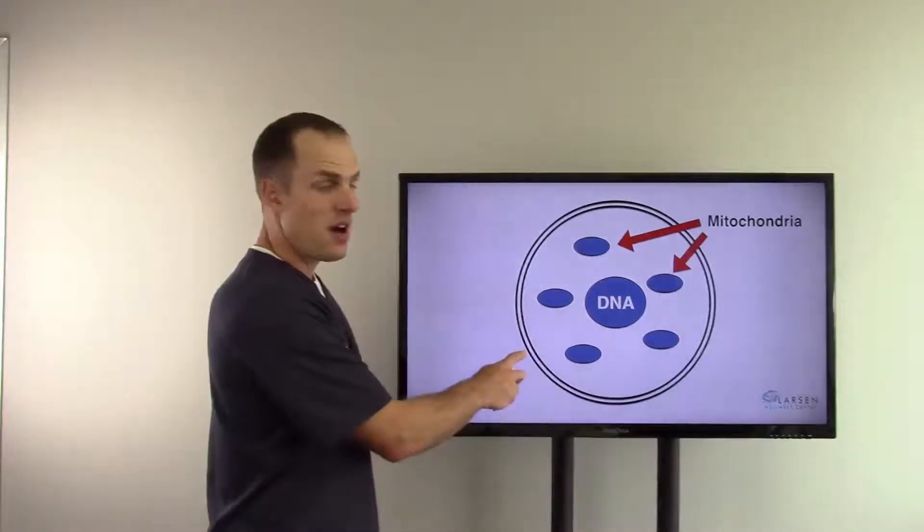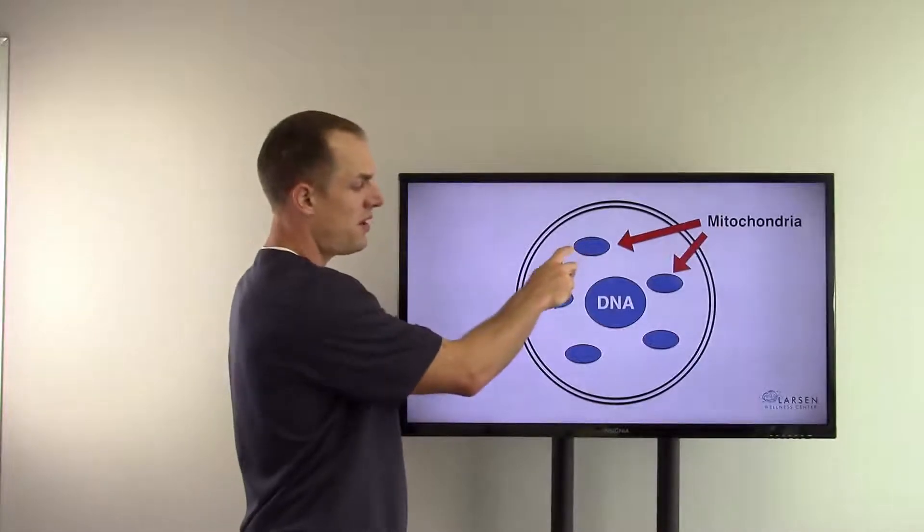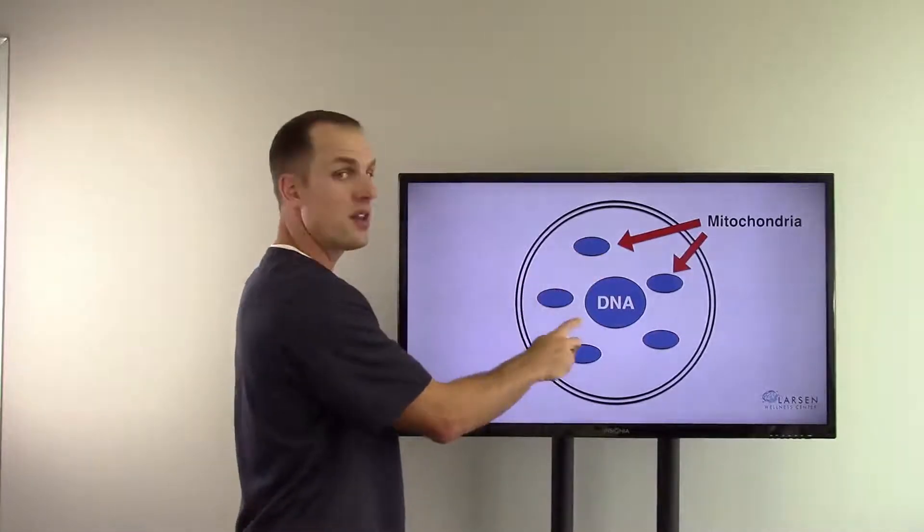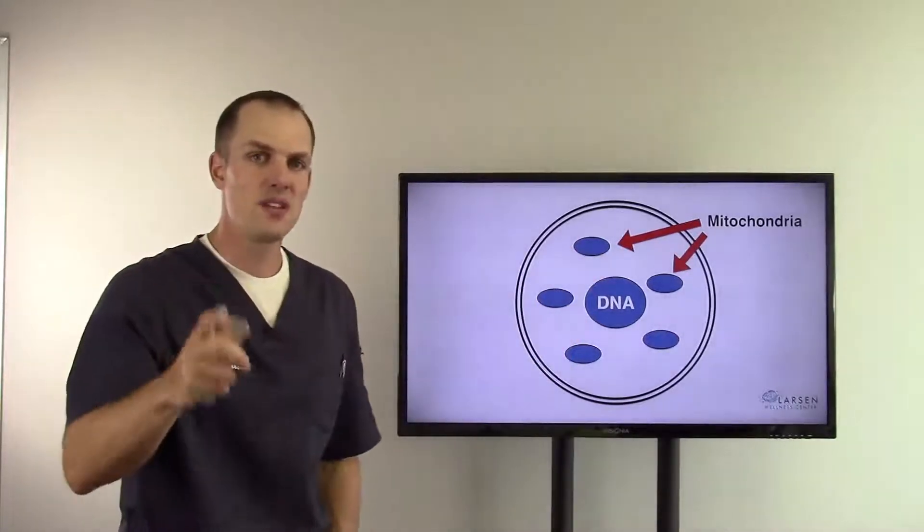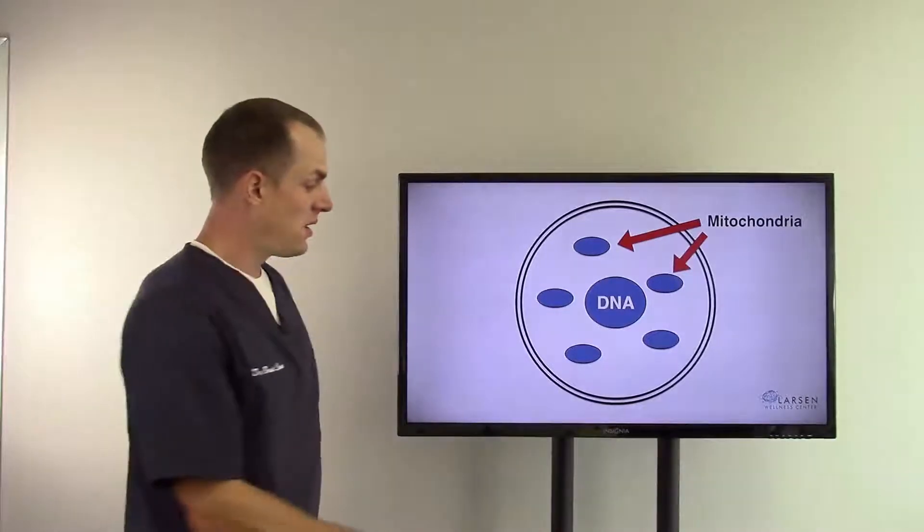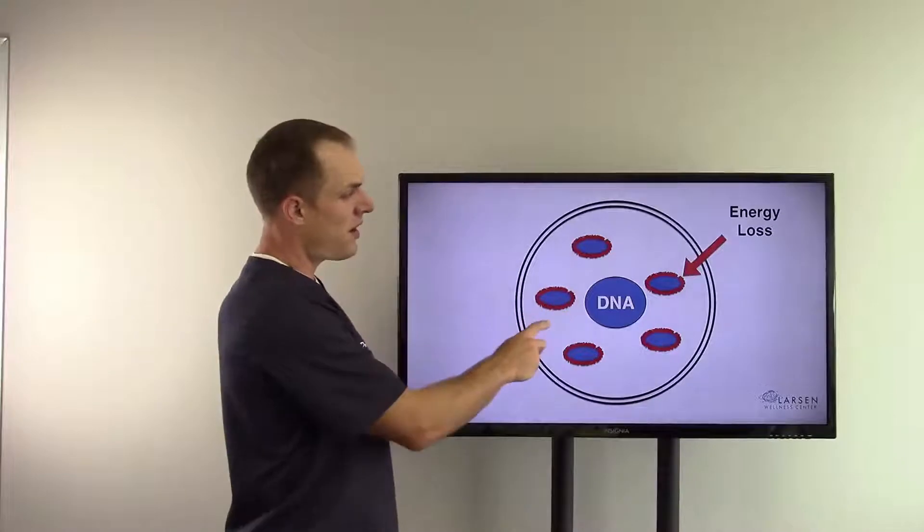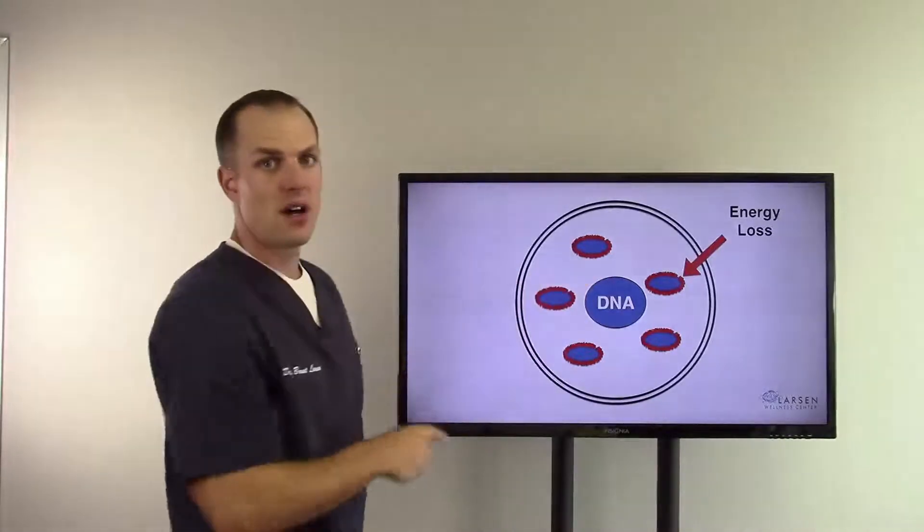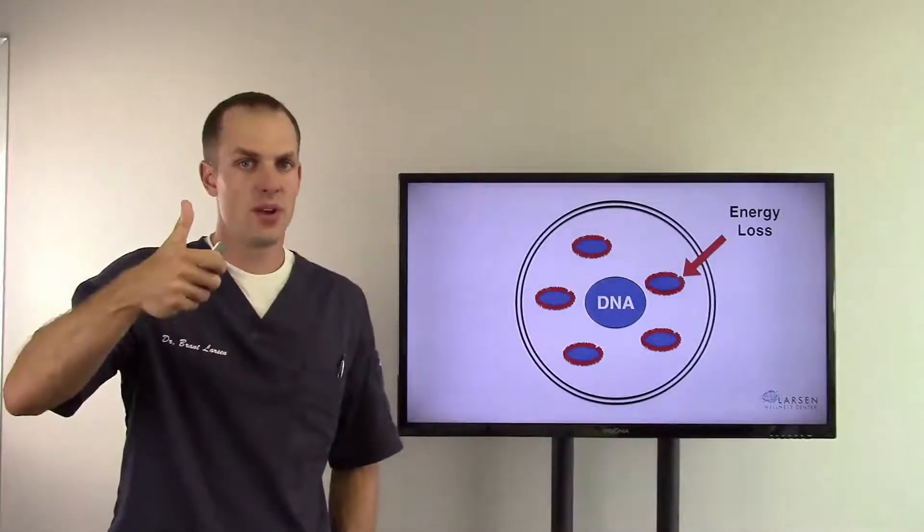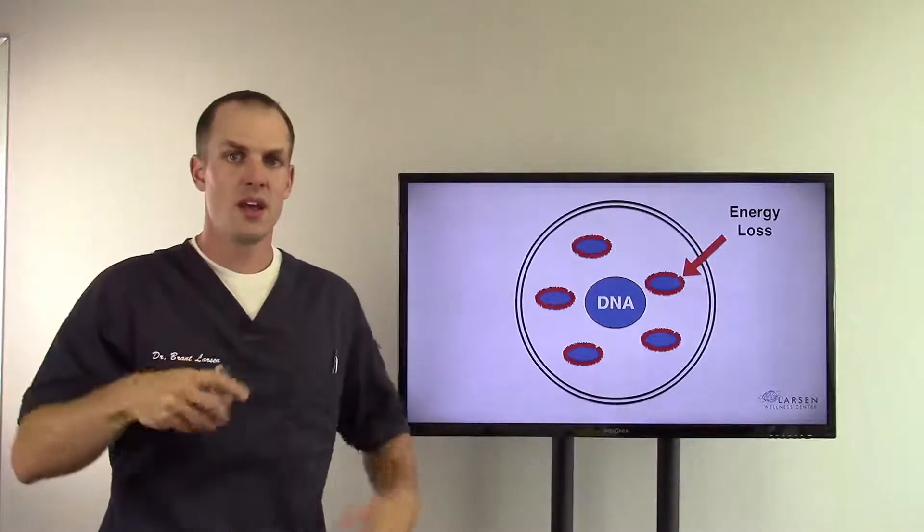But one thing to remember: here's our double membrane cell membrane here on the cell. There's a membrane right here as well around each one of these mitochondria that's actually more sensitive to inflammation than this membrane right here. You can see that here - we put the red around there. So you get this energy loss because again, toxins are building up, nutrients can't get in, the right things can't happen anymore because you have cell inflammation.